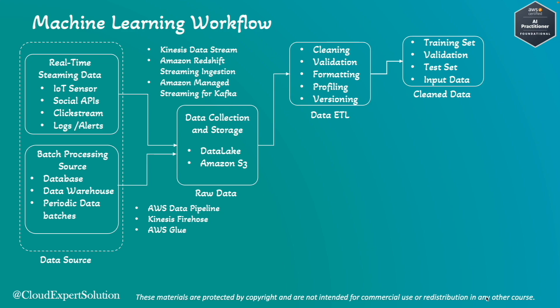Clean data can be broken into multiple sets. For machine learning training, we can split the data into a training set — roughly 80% of your total dataset — a validation set at roughly 10%, and then a test set. If your model is already trained and you want to generate inferencing, you can use the data as input to the model.